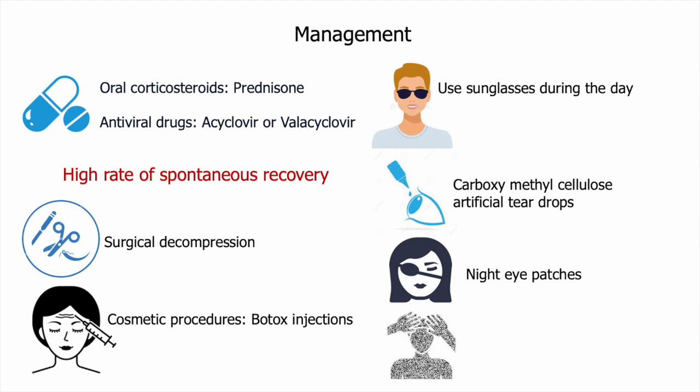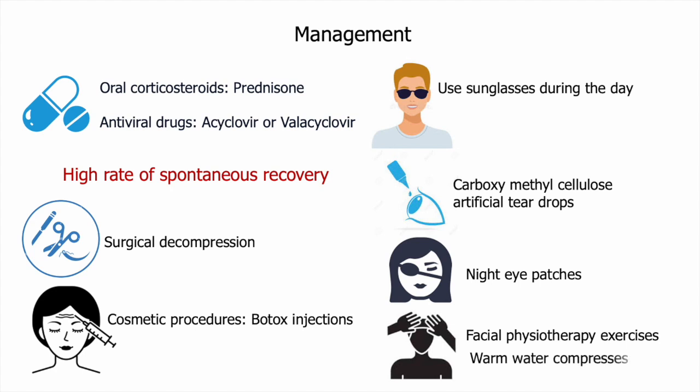Persistent facial asymmetry and muscular contractures may require cosmetic surgical procedures or botulinum toxin (Botox) injections. Patients are advised to use sunglasses during the day, carboxymethylcellulose artificial tear drops, and night eye patches to prevent corneal abrasions and keratitis, and to avoid dirty or noxious fumes. Facial physiotherapy exercises combined with warm water compresses are highly effective. Local superficial heat therapy for 15 minutes per session applied to the facial muscles prior to electrical stimulation has also been recommended as part of physical treatment.